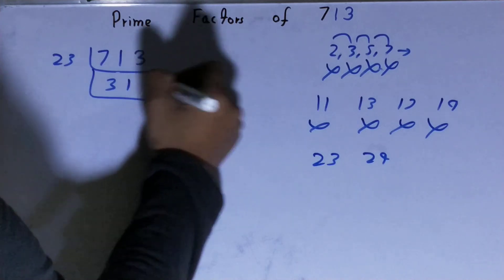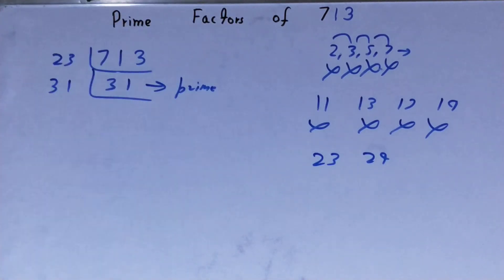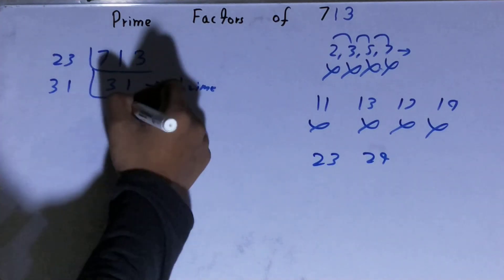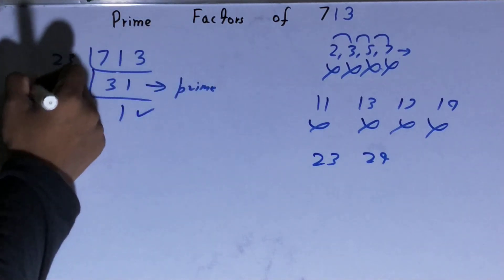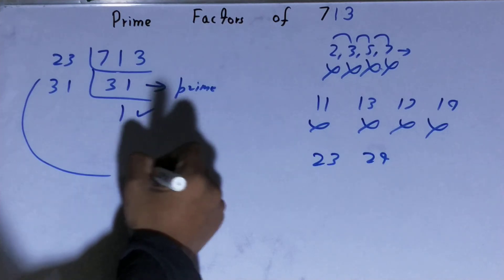So to divide this 31, you need 31 on the left hand side, and when you'll do so, you'll be left with 1. And once you're left with 1, the work is done. And whatever you have on the left hand side will be the prime factors of the number 713, that is 23 times 31.